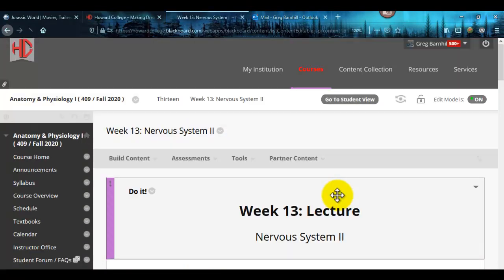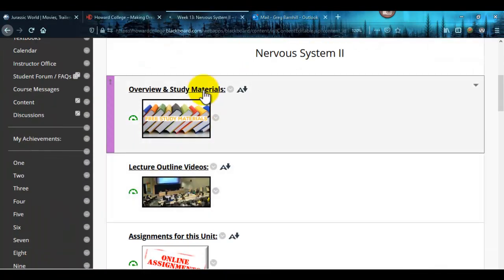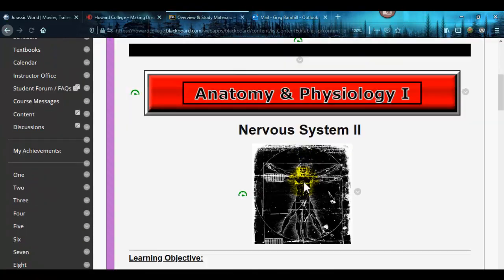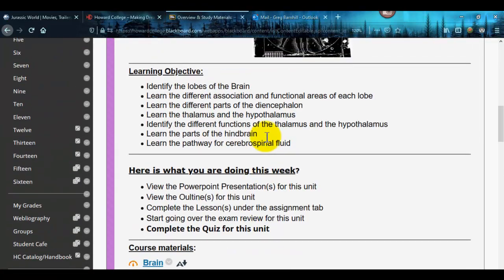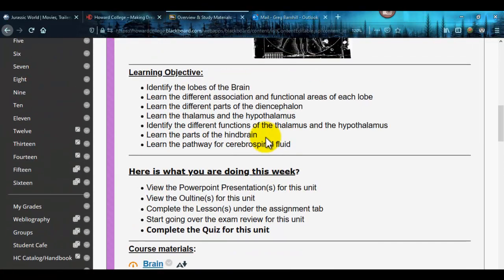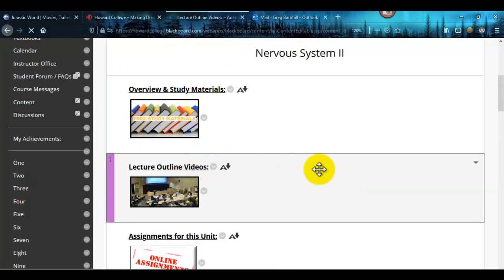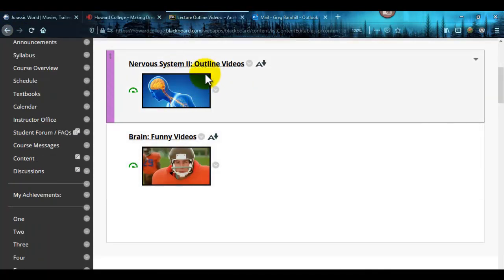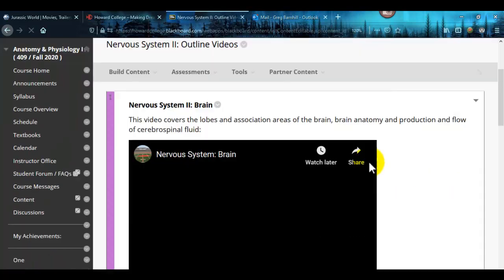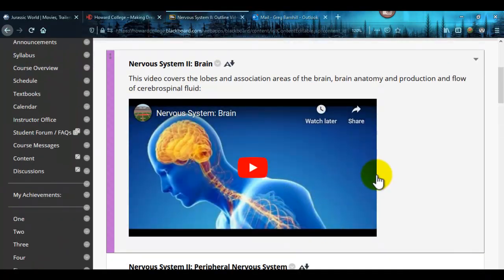Same as the whole semester, if you click on this tab, here are the learning objectives, the brain PowerPoint and outline, and the peripheral nervous system PowerPoint and outline. Those are pretty detailed. These are videos, and I try to keep videos short. These weren't super short but they weren't long either.